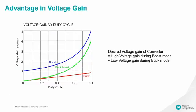Now, let us compare the voltage gain of a conventional buck-boost or SEPIC converter with a 4-switch buck-boost converter. Voltage gain is the ratio of output voltage to input voltage. A high voltage gain is desired for a boost converter as it can boost a small input voltage. Similarly, a low voltage gain is important for a buck converter as it can step down high input voltages.